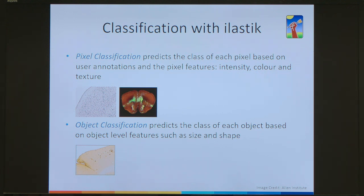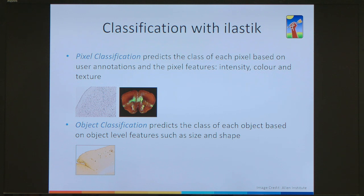Going back to Elastic — for classification it has two main workflows. The first is the pixel classification workflow, where you upload your images and classification is based on user annotations that you manually place yourself, plus pixel features: intensity, colour, and texture. The added value of using Elastic over traditional intensity thresholding is that it also takes into account the colour and texture of your image. Often that's all you need to do, and then you can export segmentations.